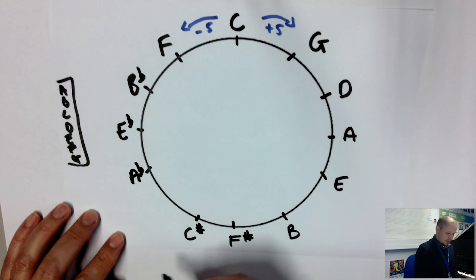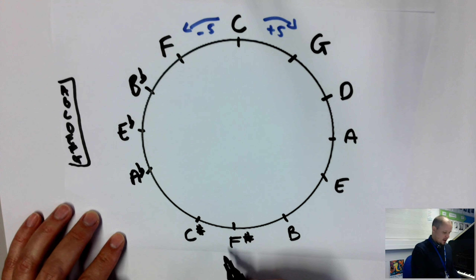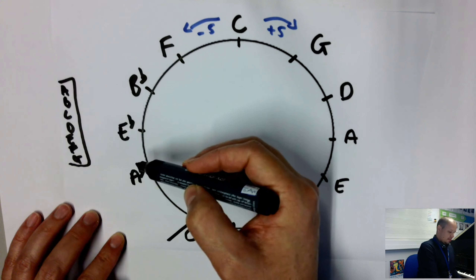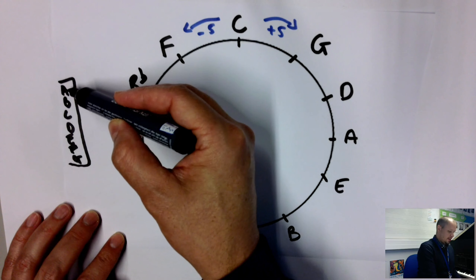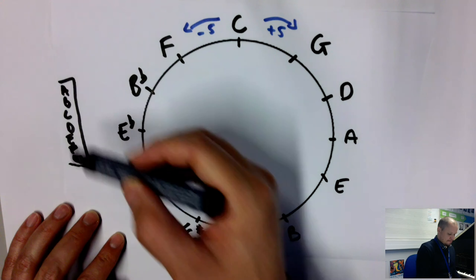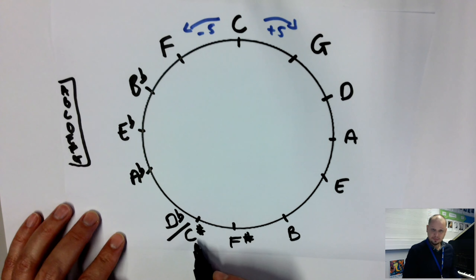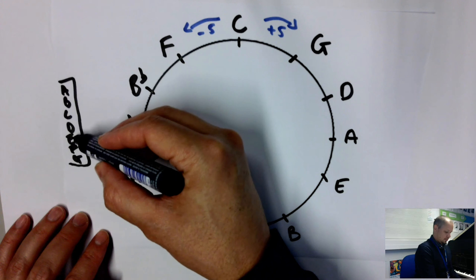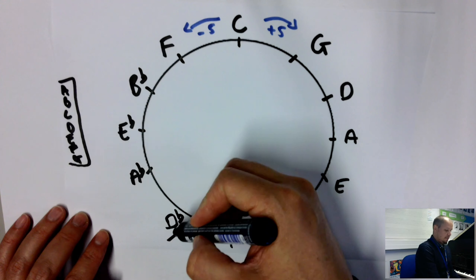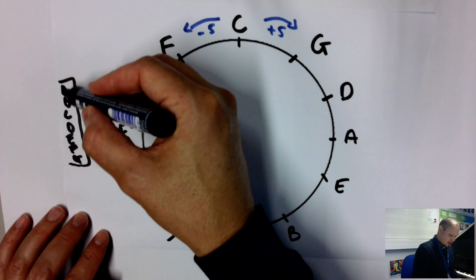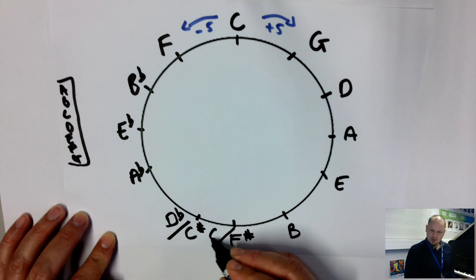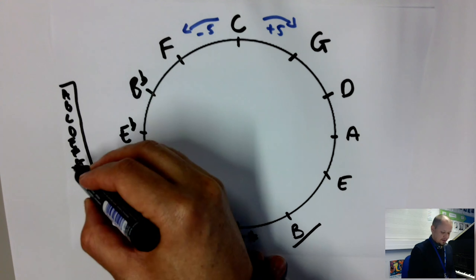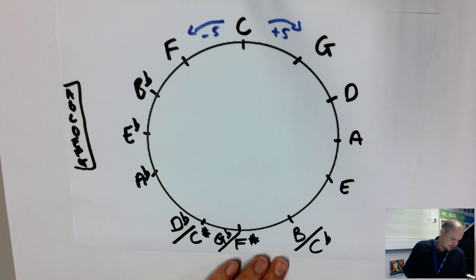Now a weird thing happens at the bottom. Going back from A: A, G, F, E, D flat — D flat major shares the same position as C sharp major. Then G flat shares the same position as F sharp. And C flat shares the same position as B major.